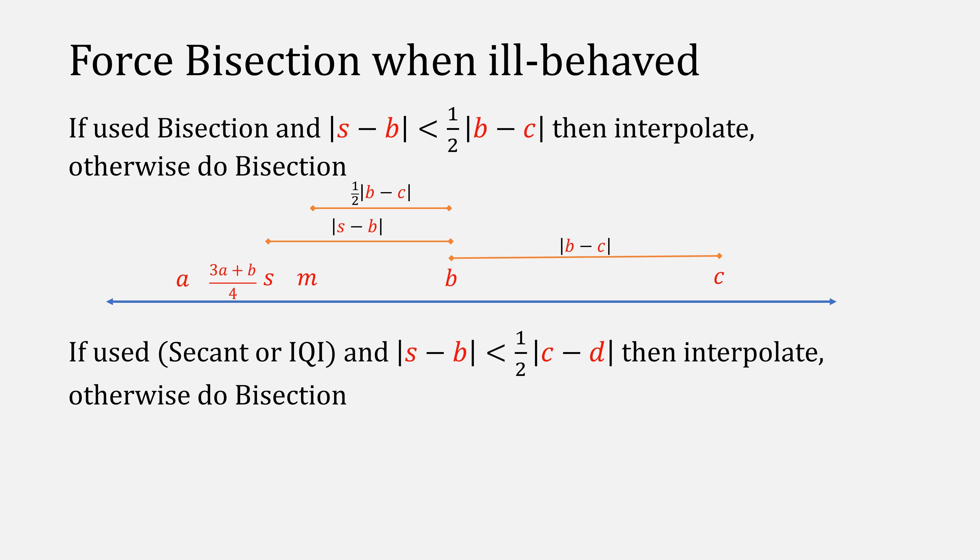There's one more check, which is if we used secant method or inverse quadratic in our last iteration. We'll check our current step size against the second to last step we took. If this passes this test, we'll go ahead and interpolate like normal. Otherwise, we'll force a bisection. This is intuitively trying to say if our interpolation is giving us very small steps, then it's better to do a bisection.